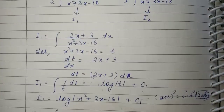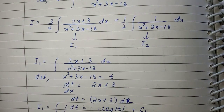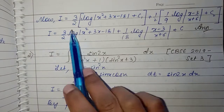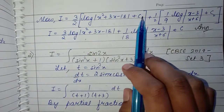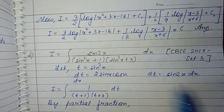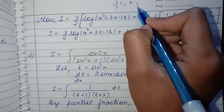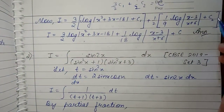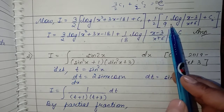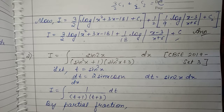Now we put together I1 and I2 values. The total is (3/2)·I1 + (1/2)·I2. Substituting the values and writing the combined constants as C, we get our final answer. I hope this is understood.